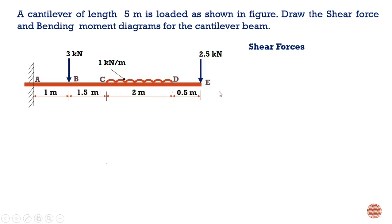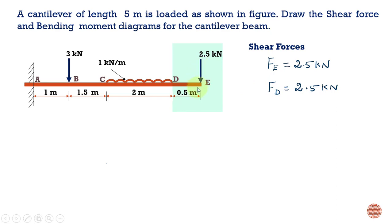At point E we have a point load of 2.5 kilonewtons. At point D we have the same load, because the shear force between D and E remains constant — there is no other load acting at D. So the load acting at E is also acting at point D.